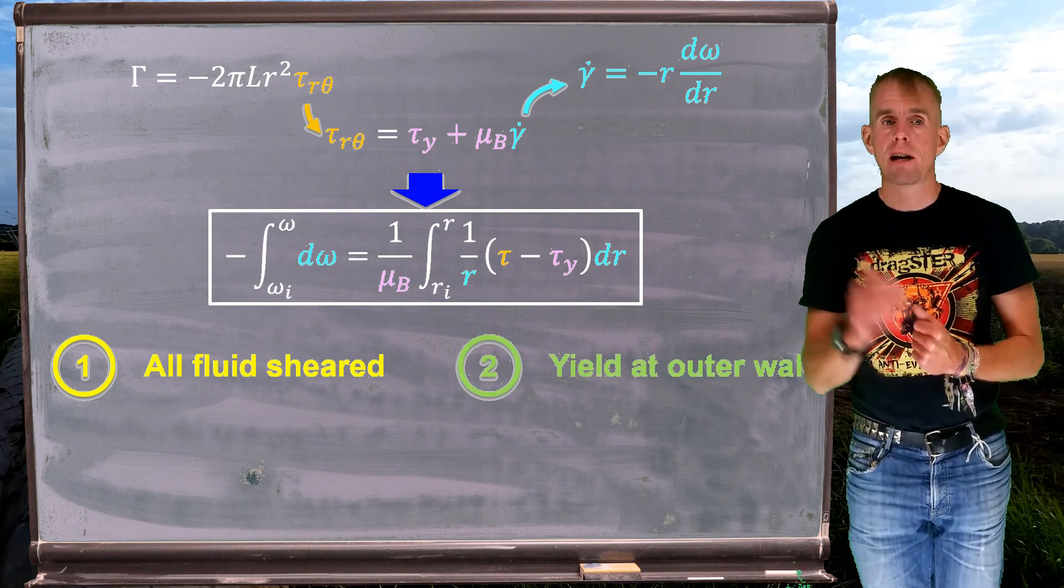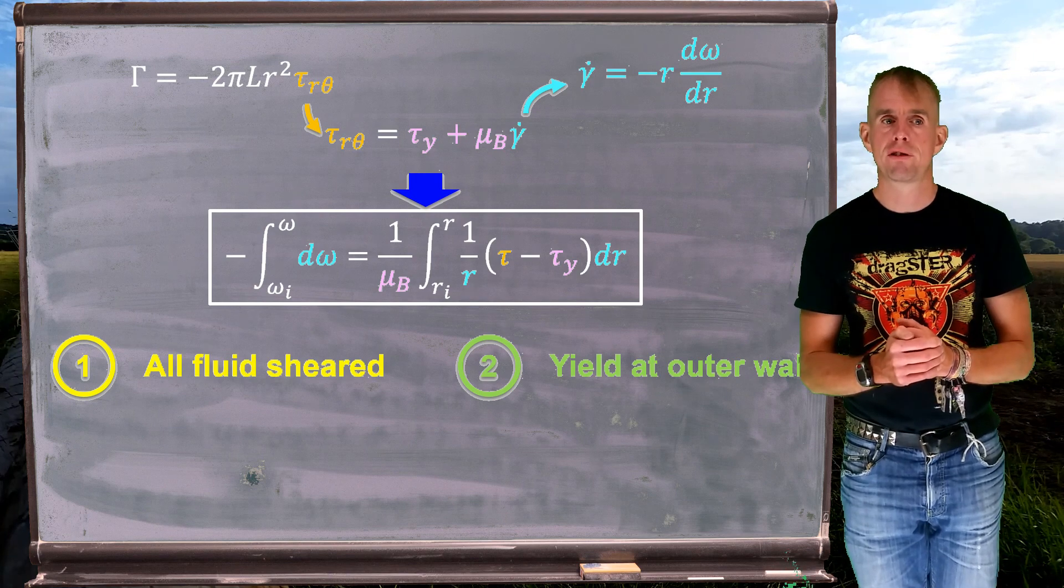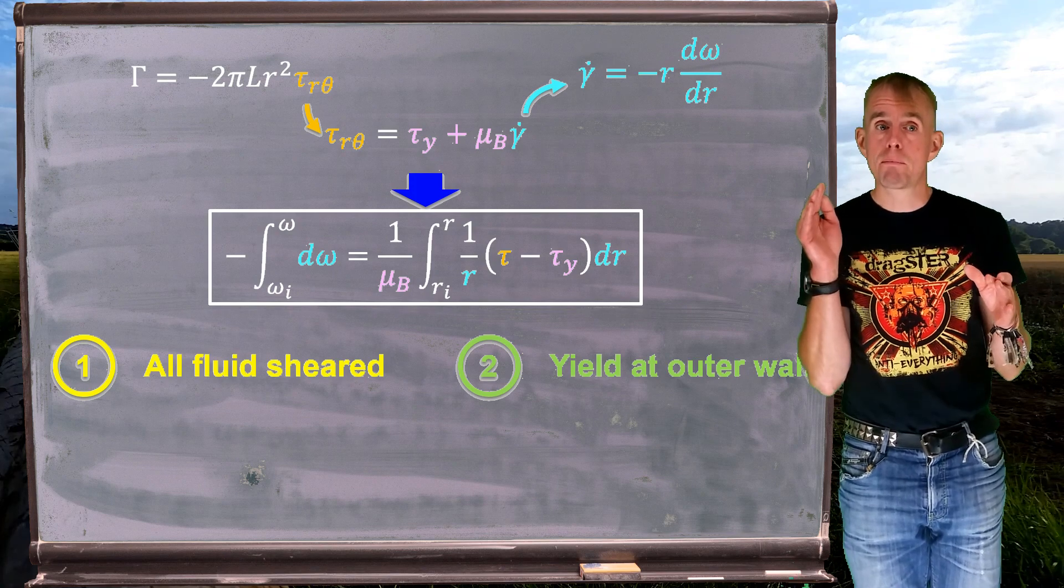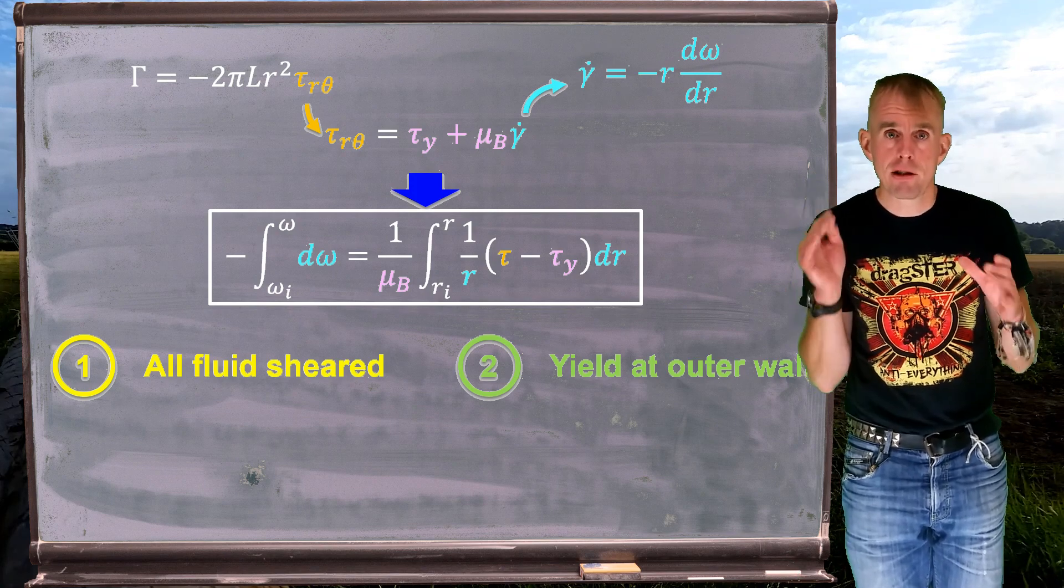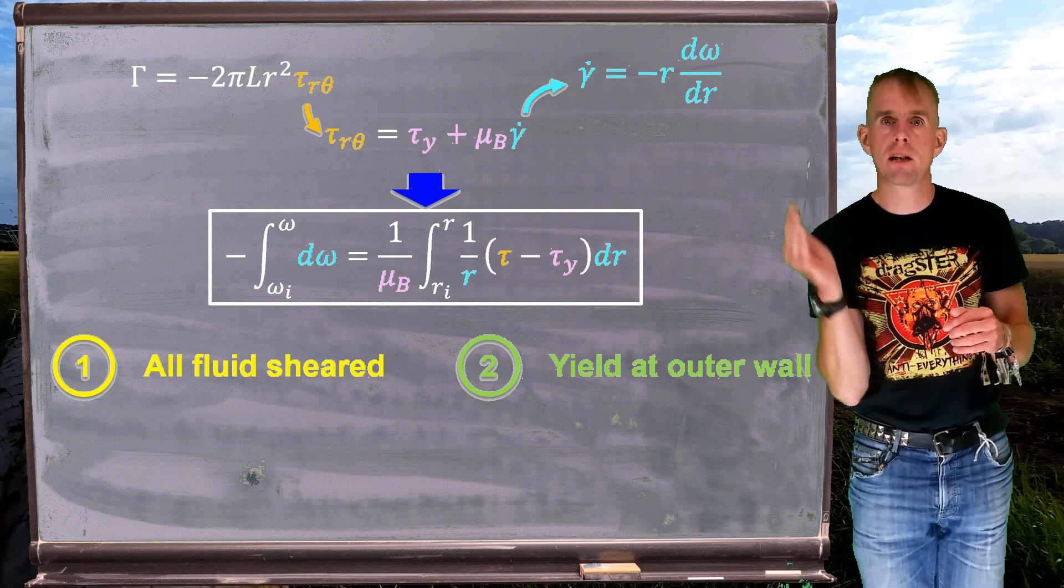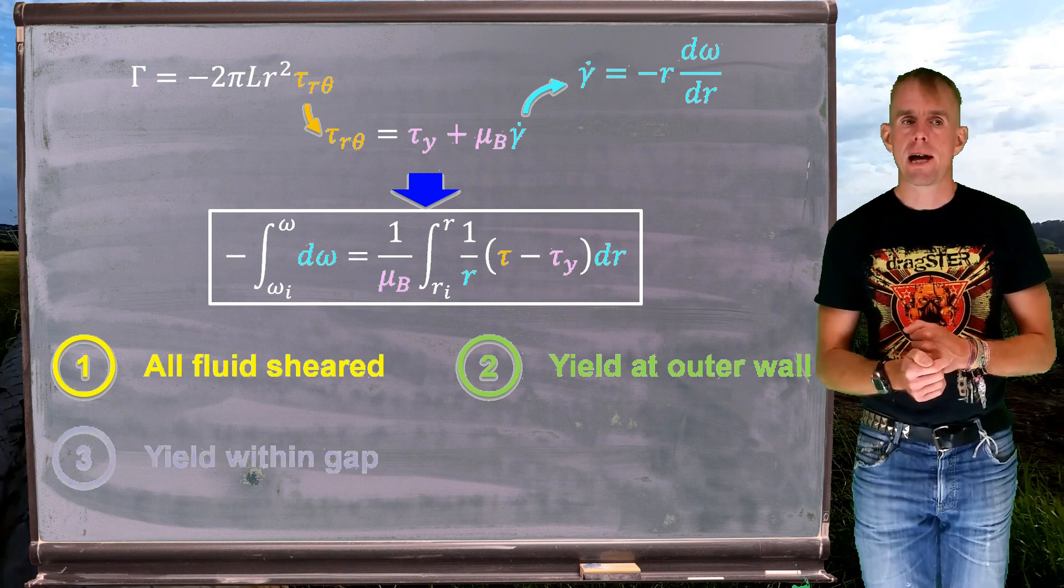Now, the second case is a limiting case of the first case, because we can still have all the fluid to be sheared, but only just insofar as that on the outer wall we just have the yield stress. So it's a limiting case.